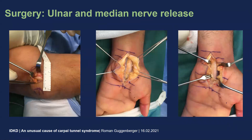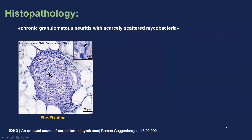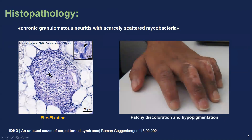The patient therefore underwent surgery and all those classic entrapment sites were released: the ulnar nerve canal about the elbow, the loge de Guyon at the wrist, and also the carpal tunnel at the wrist. Histopathology was taken and we would find a chronic granulomatous neuritis with scarcely scattered mycobacteria under the microscope in this specific fixation. In this magnification view, you can see a very small mycobacterium, and here you see the granulomatous inflammatory infiltrate with some peripheral nerve tissue. In addition to those histopathology findings, the patient developed more patchy discolorations and hypopigmentation of his skin, which was also noted by the clinicians.